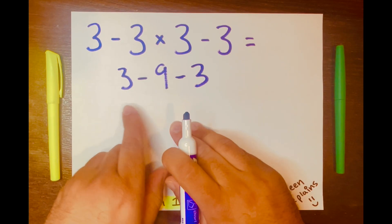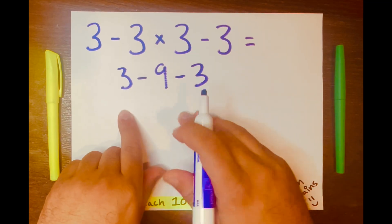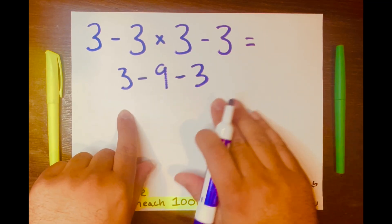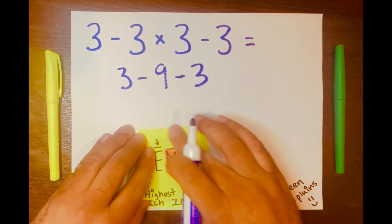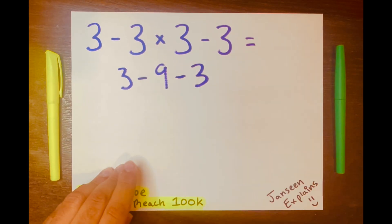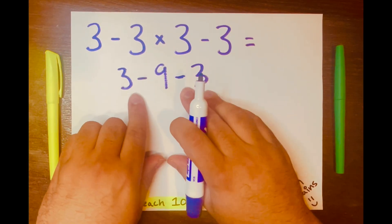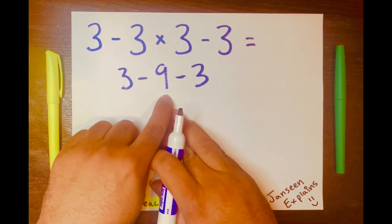Again, you read from left to right according to PEMDAS levels. So they're just subtraction, so 3 minus 9 will go first.